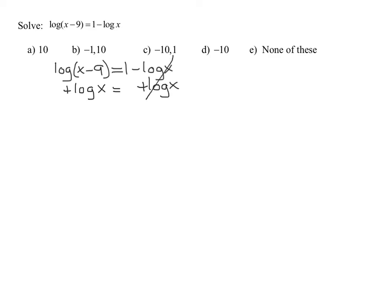As you can see, those will add up to 0. On the left-hand side, we're going to have the common log of x minus 9 plus the common log of x equals 1. So that's my first goal: I need all my log terms on one side, everybody else on the other. Now I have to combine these two logarithms.